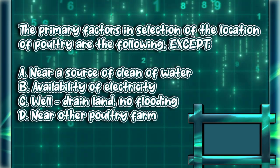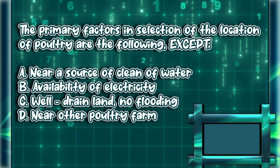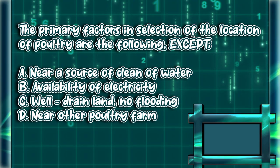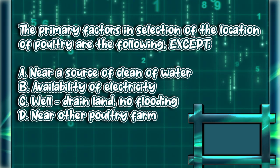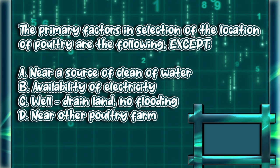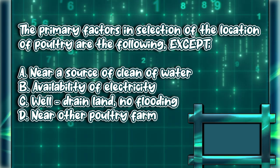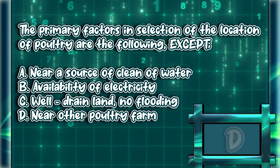The primary factors in selection of the location of a poultry farm are the following, except: A. Near a source of clean water. B. Availability of electricity. C. Well-drained land, no flooding. D. Near other poultry farms. The answer is letter D.